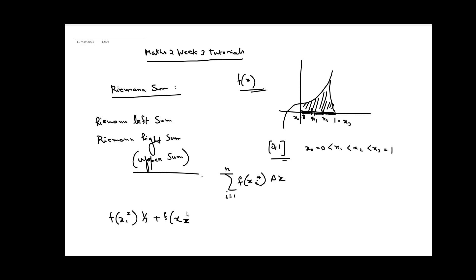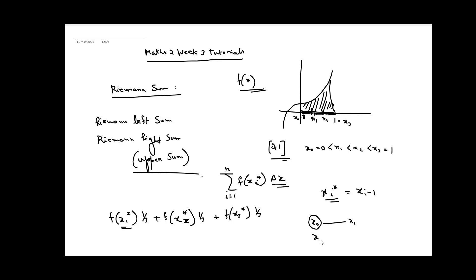So the Riemann sum is f(x1*) · (1/3) + f(x2*) · (1/3) + f(x3*) · (1/3). Now, what is x1*, x2*, and x3*? We can take xi* as xi-1, that is the left point. So the first sub-interval is from x0 to x1, and if I take x0 to be our x1*, then the second sub-interval is from x1 to x2, and our x2* is x1, and our x3* is x2. So I am taking the left point of each sub-interval.